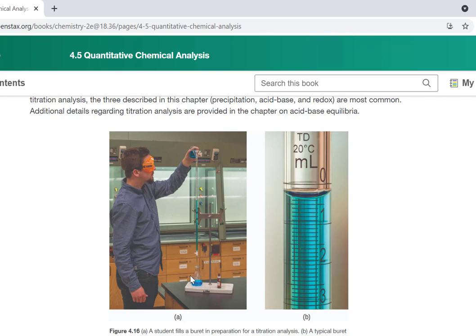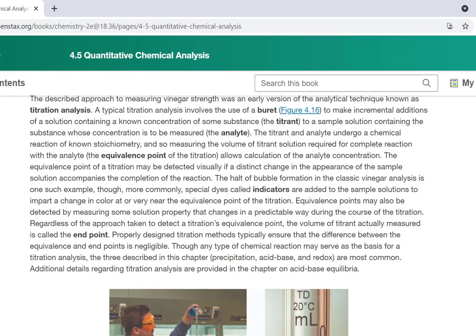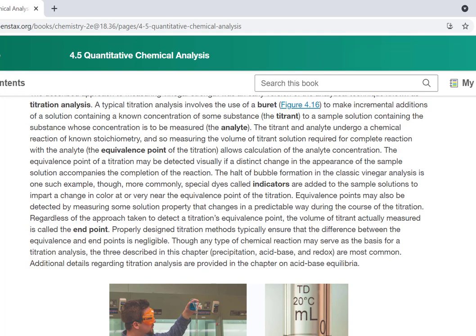And that something we put in the flask underneath the burette, and that's called the analyte. We mix those together, and ideally we have a way of figuring out when that reaction has completed. And if we can do that and we can figure out how much we used of the titrant in order to completely react with the analyte, then we can do some calculations.